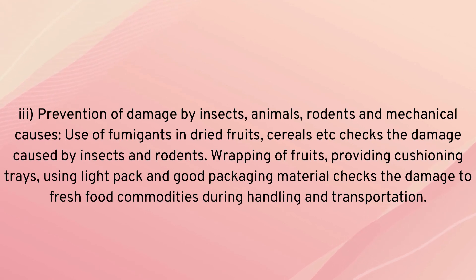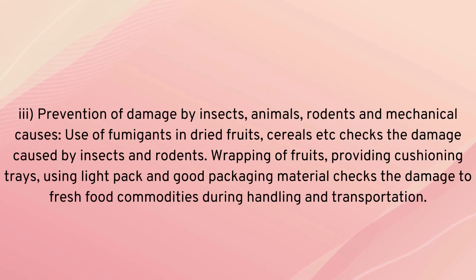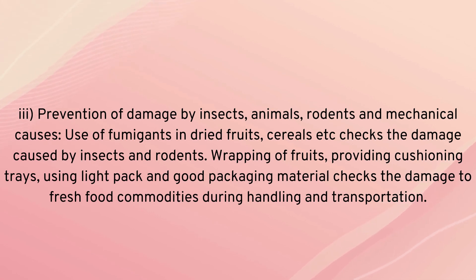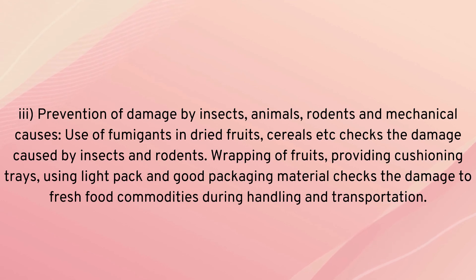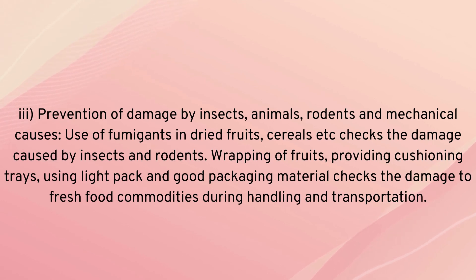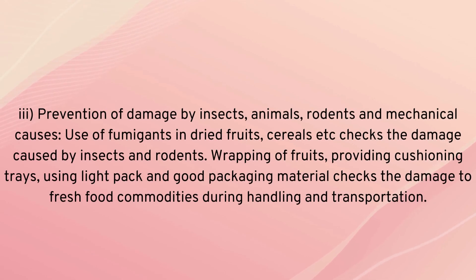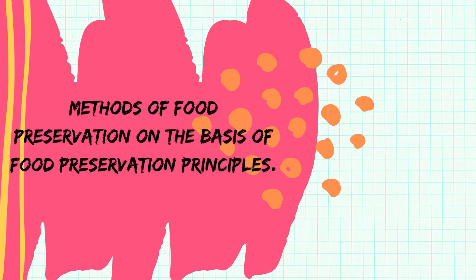Prevention of damage by insects, rodents, and mechanical causes includes use of fumigants in dried fruits and cereals to check the damage caused by insects and rodents. Trapping and providing good storage conditions also help. Using tight packaging and good packaging material checks damage to fresh food commodities during handling and transportation.